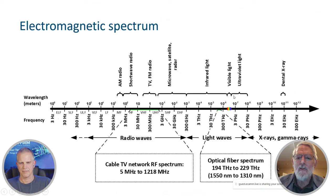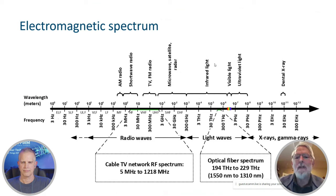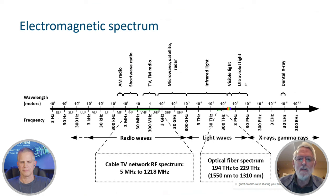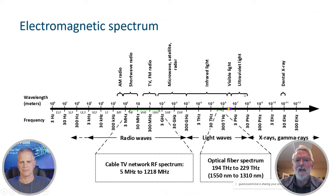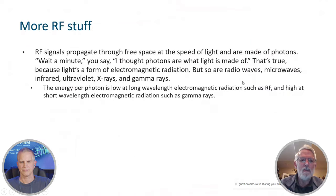Ultraviolet light has higher frequency and higher photon energy, which is where we start getting into what's called ionizing radiation. The wavelengths are so short they can start to do damage to tissue, cells, and DNA. That's why overexposure to the sun can cause things like skin cancer. When we think of radioactivity, we're typically dealing with gamma rays, where the photon energy is extremely high and can do incredible amounts of damage to human tissue.